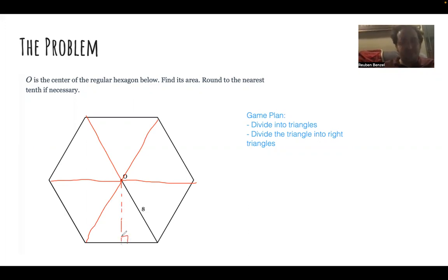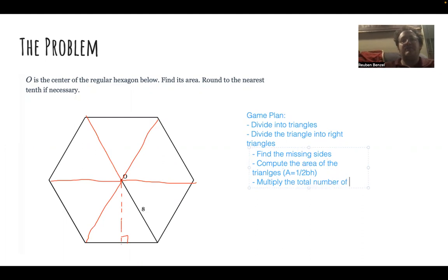We're going to actually take the triangle divided into right triangles because we know how to do those problems pretty well with trig or even special right triangles in some cases. And then we are going to find the missing sides. That's one half times base times height. And then multiply by the total number of triangles. That's our game plan on this type of problem.